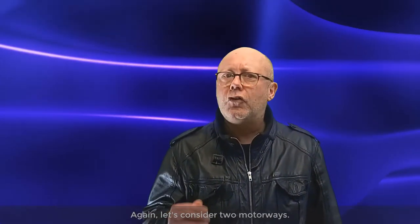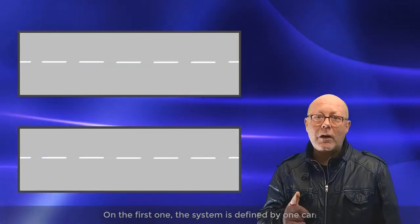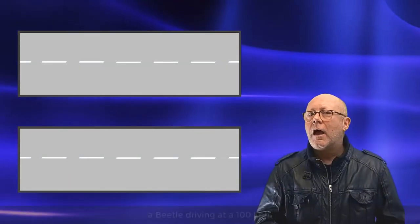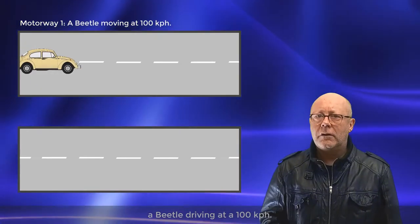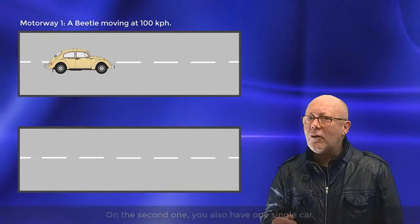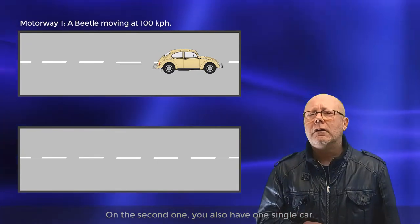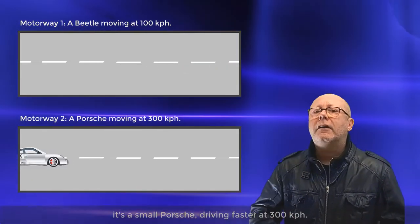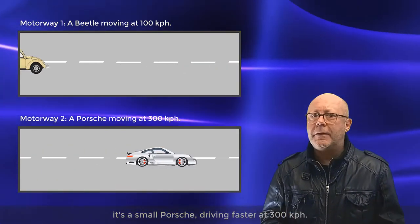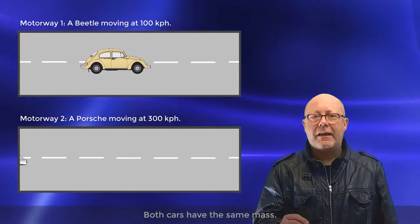Now keep this in mind and let's move on to another example. Again, let's consider two motorways. On the first one, the system is defined by one car, a Beetle driving at 100 kph. On the second one, you also have one single car — it's a small Porsche driving faster at 300 kph. Both cars have the same mass.